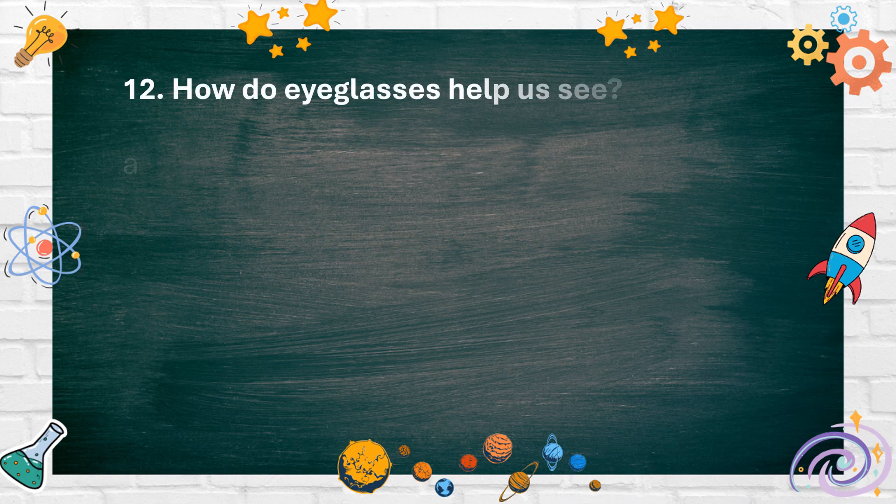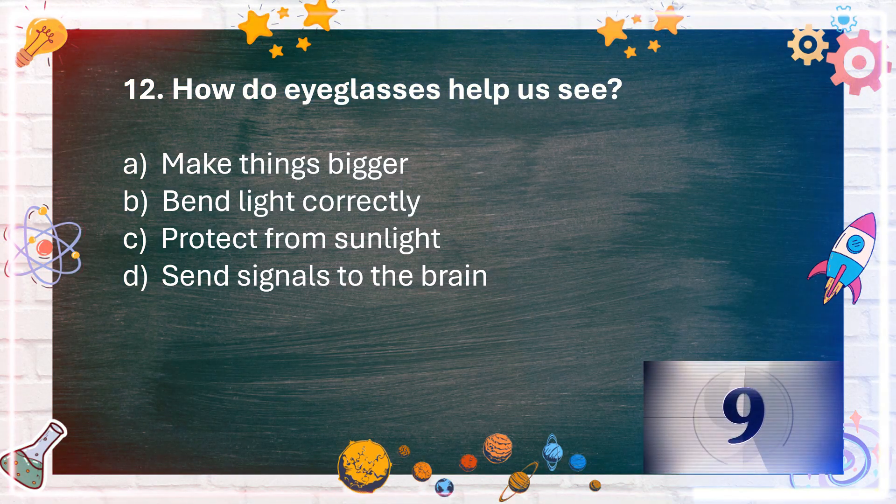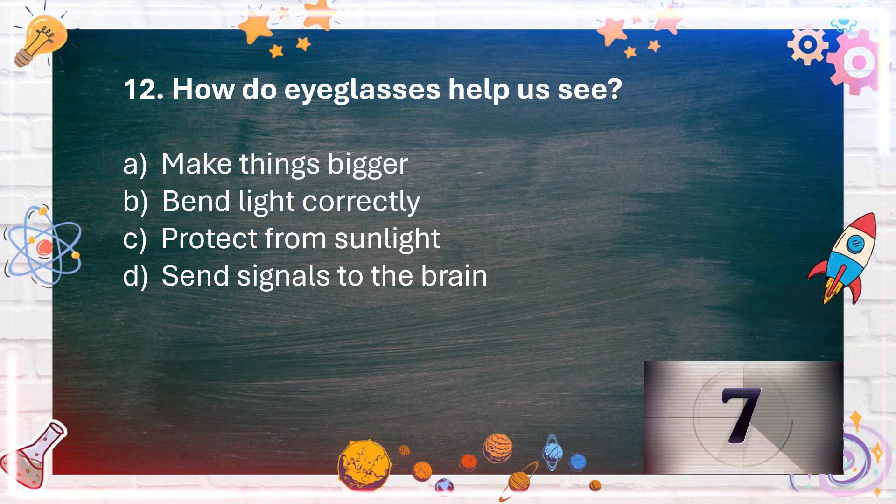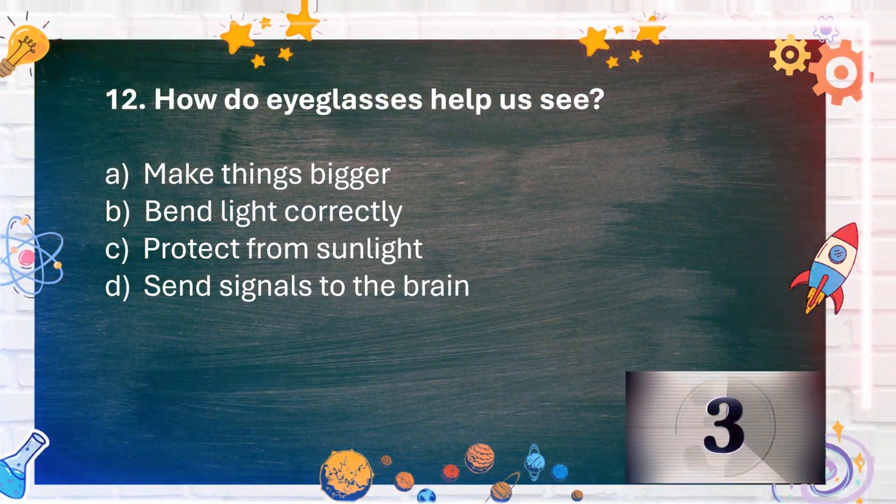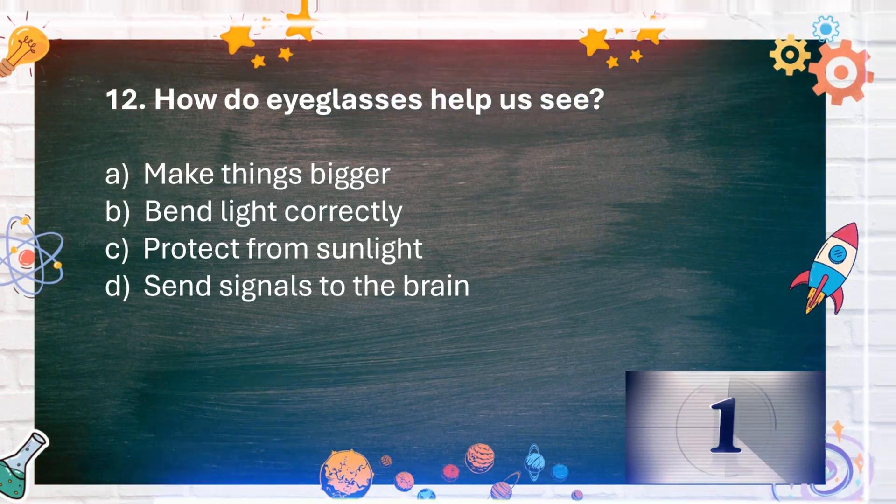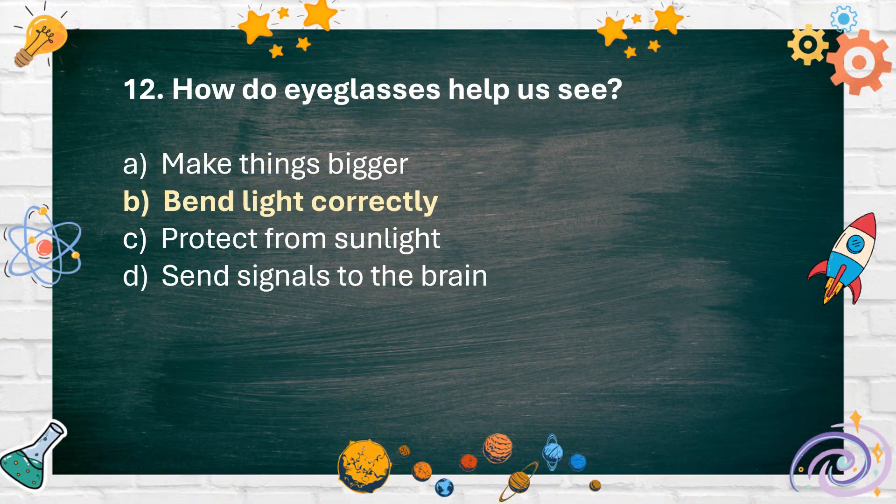Number 12: How do eyeglasses help us see? A. Make things bigger. B. Bend light correctly. C. Protect from sunlight. D. Send signals to the brain. The answer is B. Bend light correctly.